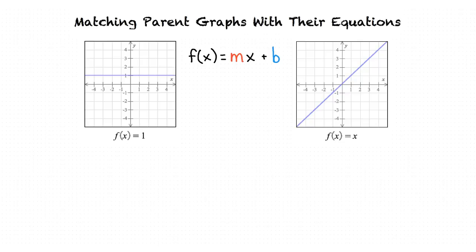What do m and b stand for? We use m to refer to the slope of the line, and we use b to refer to the y-intercept of the line — in other words, the point where the line intersects the y-axis.